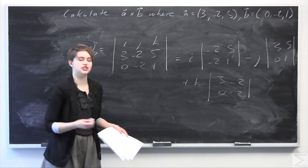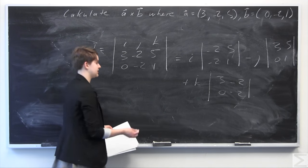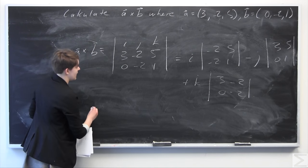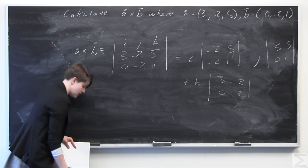From here on out, now that we've applied the formula, we can just calculate the 2 by 2 determinants, and it's pretty simple.